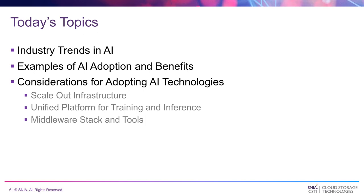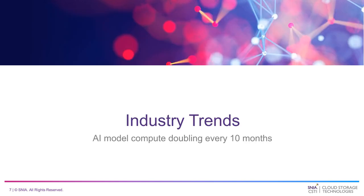Today we will cover industry trends in AI, examples of AI adoption and benefits, and considerations for adopting AI technologies, including scale-out infrastructure, a unified platform for training and inference, and middleware stack and tools. With that, I'll turn it over to Milind. Thank you, Erin. I want to start by looking at some industry trends related to AI.